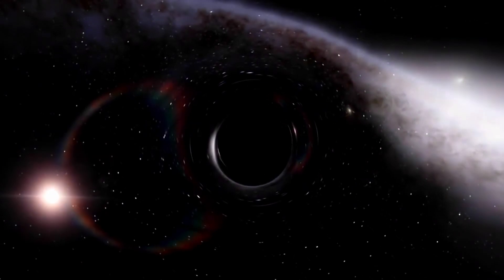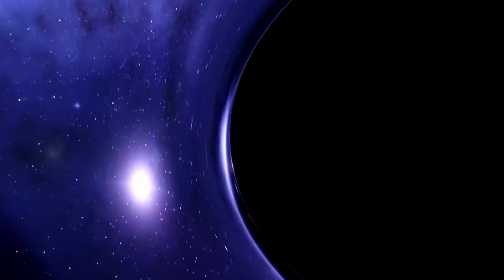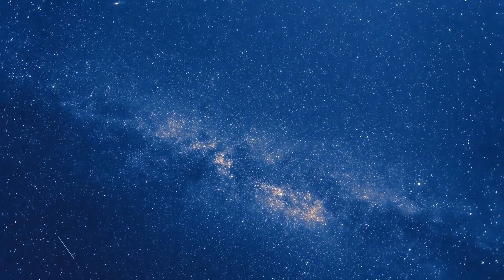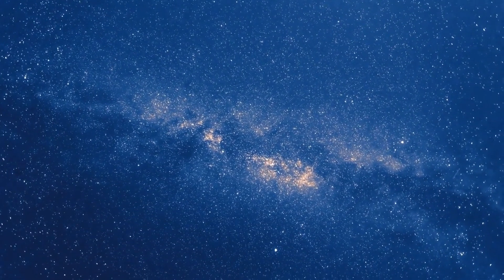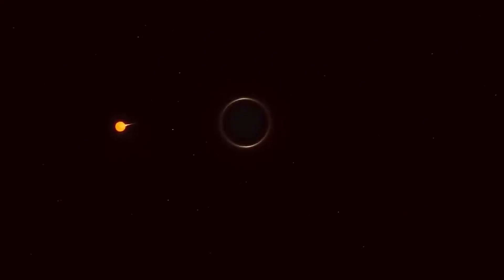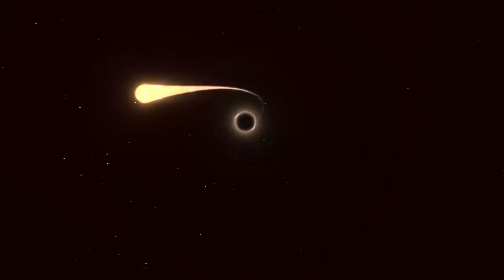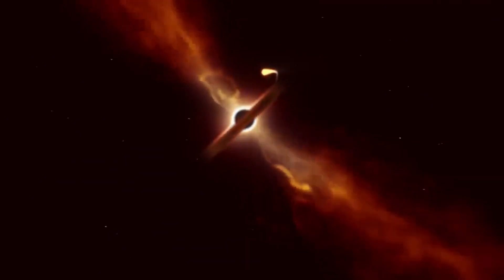Approaching a black hole is a perilous endeavor. If you got too close, you would be inexorably pulled in, with no hope of escape. This point of no return is known as the Event Horizon. Fortunately, the closest known black hole to Earth is about 1,000 light years away. If you were to fall into a stellar-sized black hole, you would face a gruesome fate known as spaghettification. The black hole's gravity is so intense that your feet would be pulled much more strongly than your head, causing you to stretch uncontrollably. This extreme stretching effect would turn you into a form resembling human spaghetti.